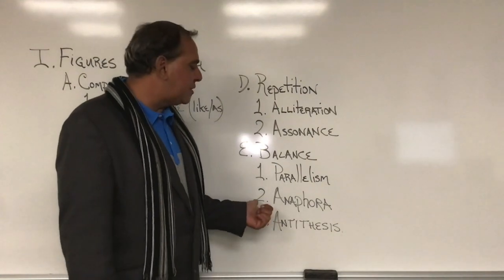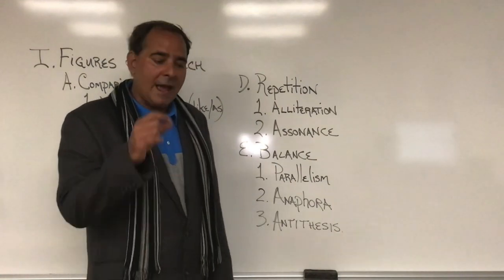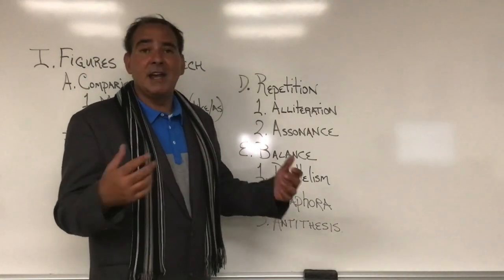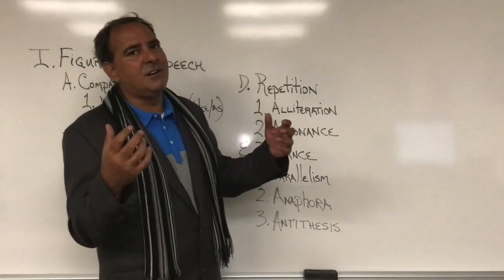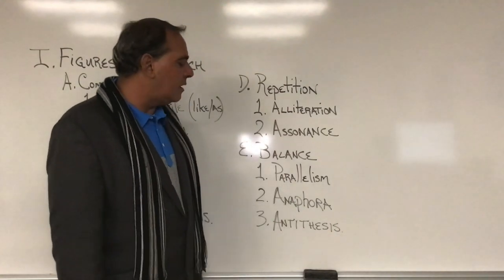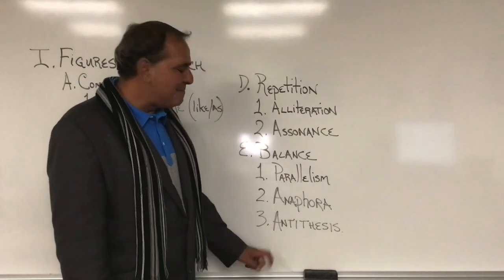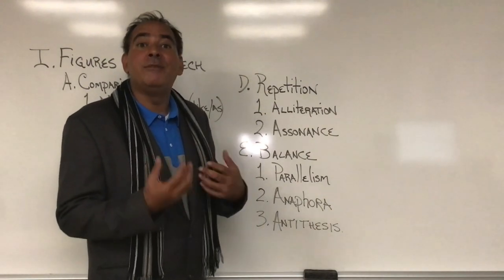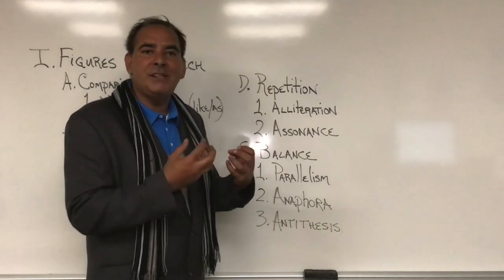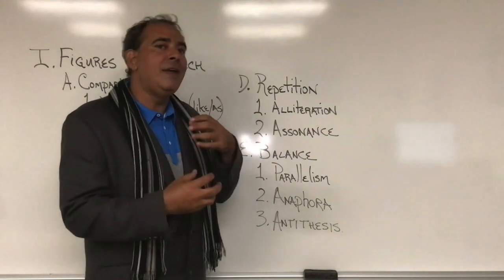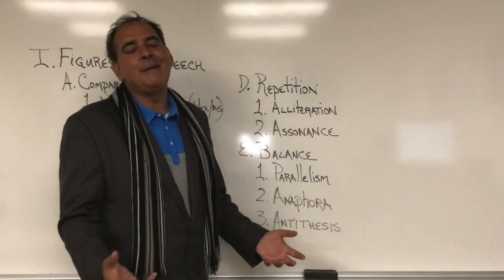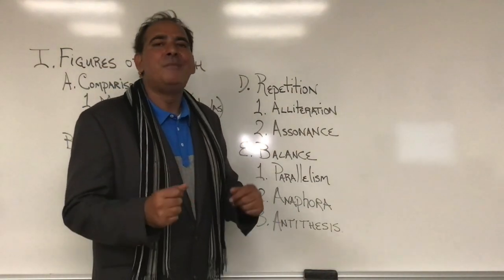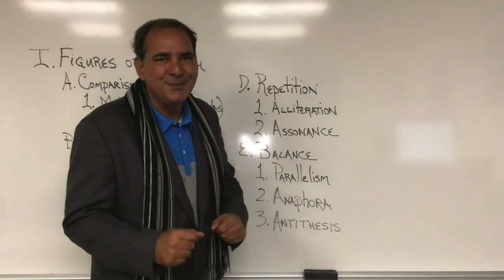A more advanced version of this is what we call anaphora, where you have the repetition of a phrase over and over again. So Julius Caesar's 'I came, I saw, I conquered' would be an example of anaphora. And then finally, my personal favorite — antithesis. This is where you have a repetition of a structure, but you invert it, so an AB structure goes then BA. The famous example is John F. Kennedy's: 'Ask not what your country can do for you, but rather what you can do for your country.'